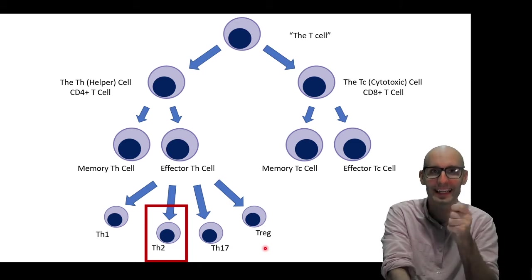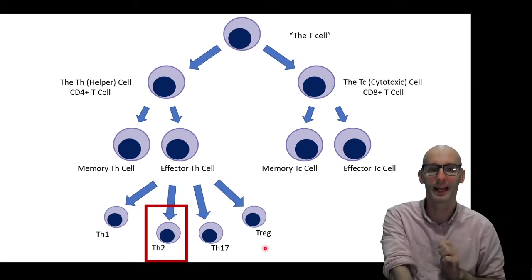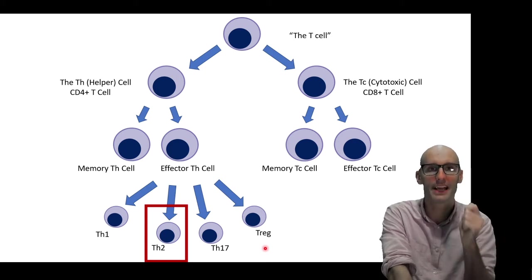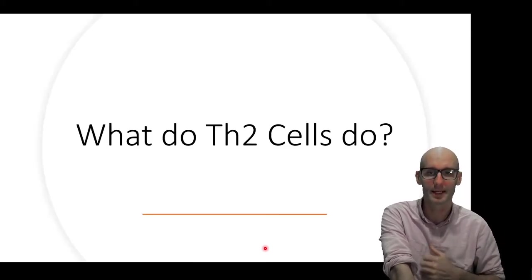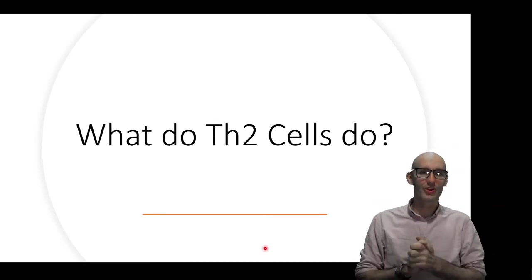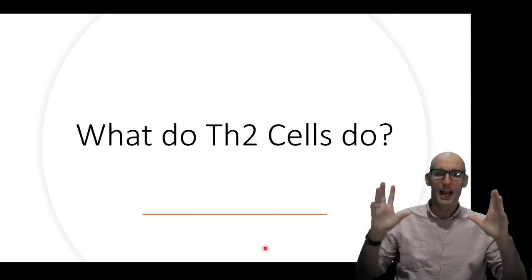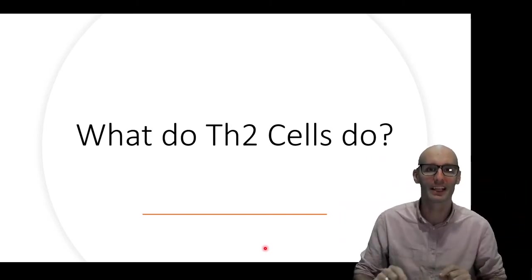And today we're going to be looking at the TH2. So that's down there, the T helper cell, and it coordinates a specific kind of immune response that's specialized for parasites. So what do TH2 cells do? Let me just give you a quick summary which will give us sort of the map of TH cells and then we can start filling in the details.